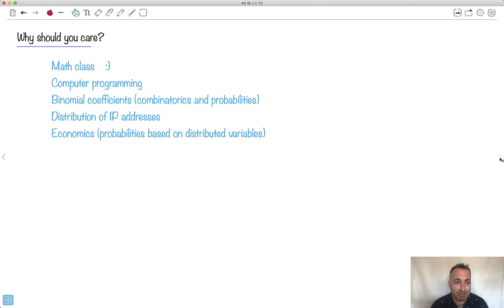Now, when do we actually use these things? I mean, yes, we use them in math class. We use them in programming. Binomial coefficients are really helpful for combinatorics or probabilities. If you're HL, you're going to see these all over the place. I've even seen one use to distribute IP address. This is internet protocol. This is, you know, it's really interesting how they do this. Economics, you know, you can do probabilities based on distributed variables. They actually have to use these binomial coefficients. So there are reasons why you might need them, but if nothing else, you need them for your class. So there you go.